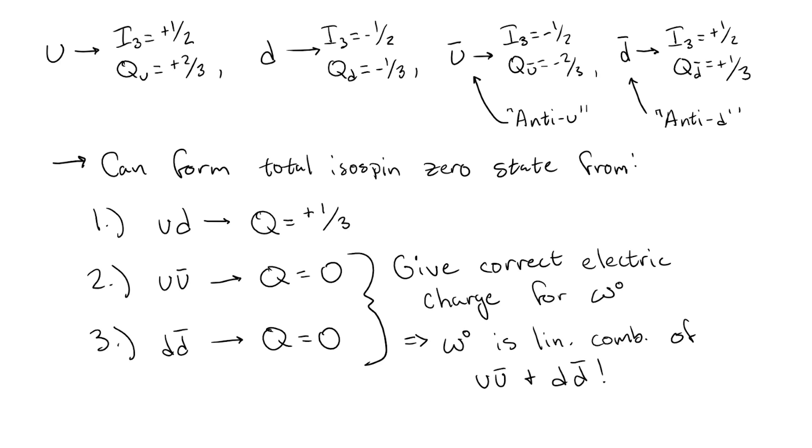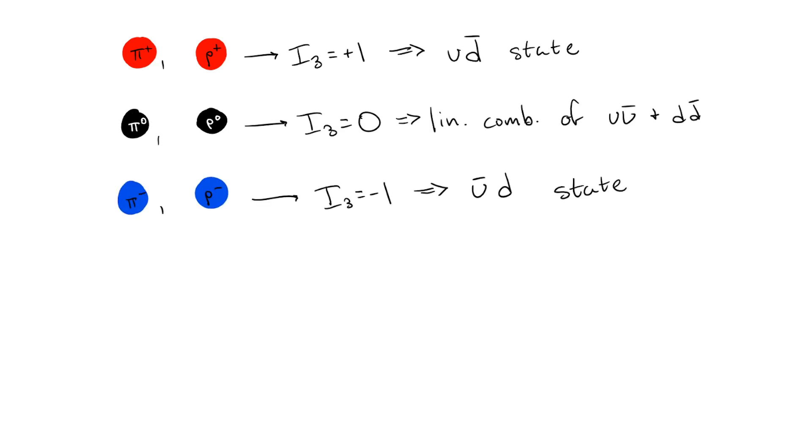Going through a similar discussion for the pions and rho mesons, we find that the pi plus and the rho plus are up-anti-down states, the pi zero and the rho zero are again linear combinations of up-anti-up and down-anti-down states, and the pi minus and rho minus are down-anti-up states, the difference between the pions and rho mesons being their spins and their masses.